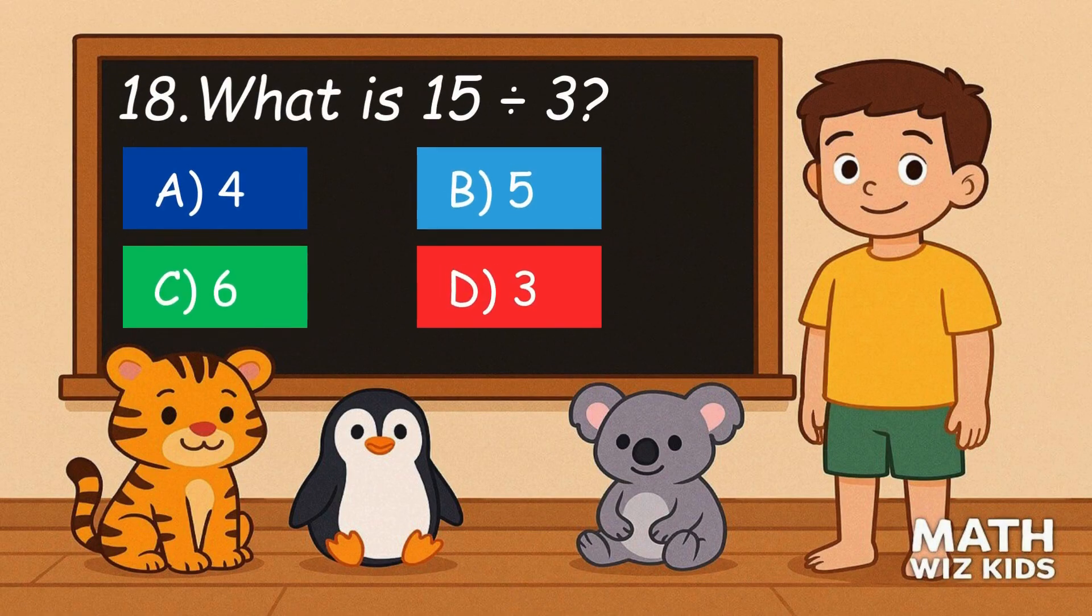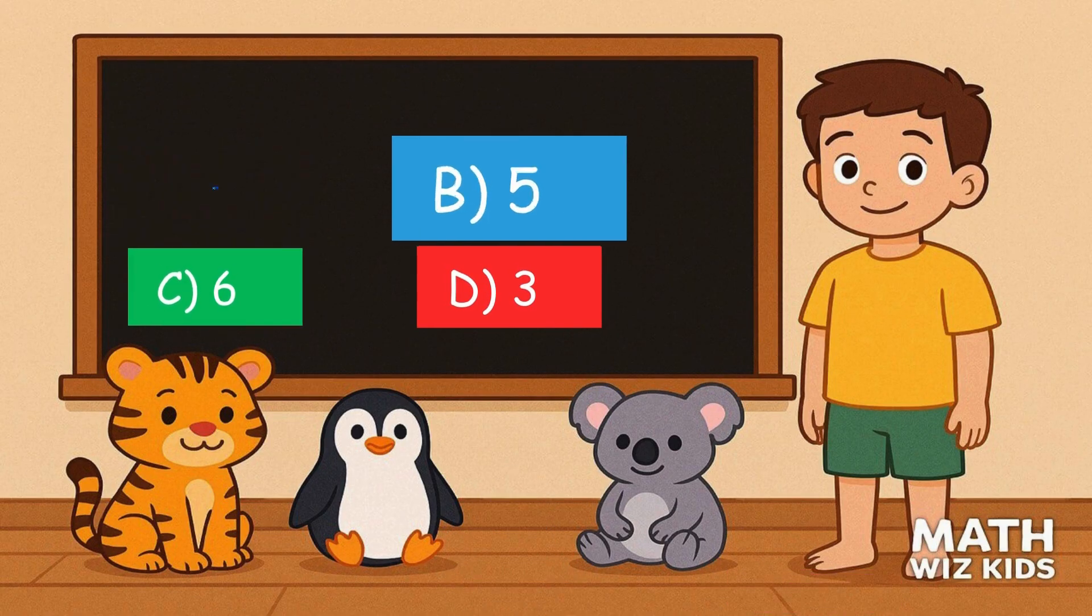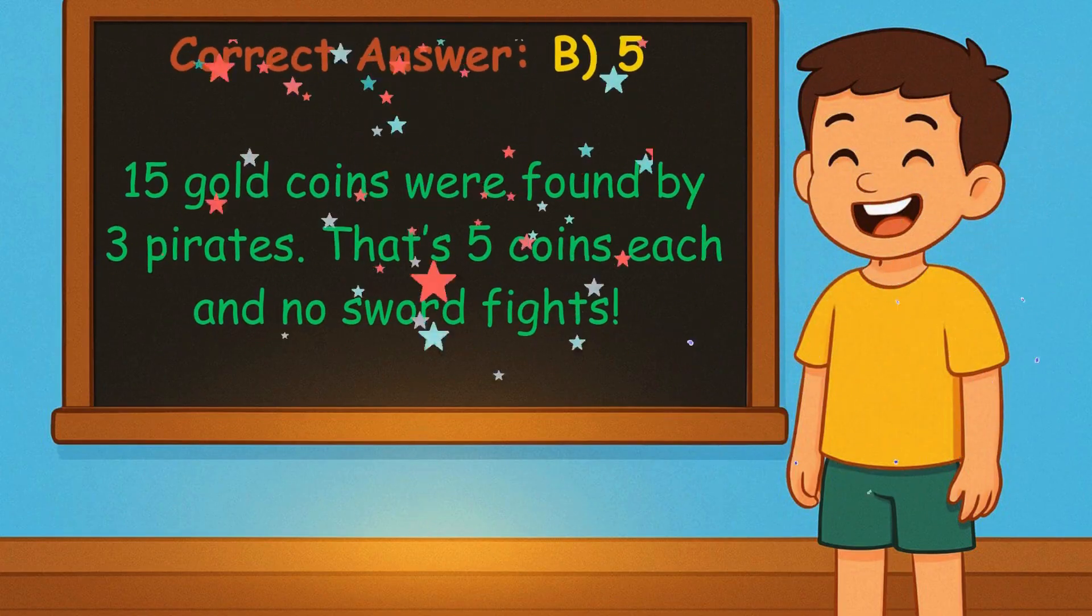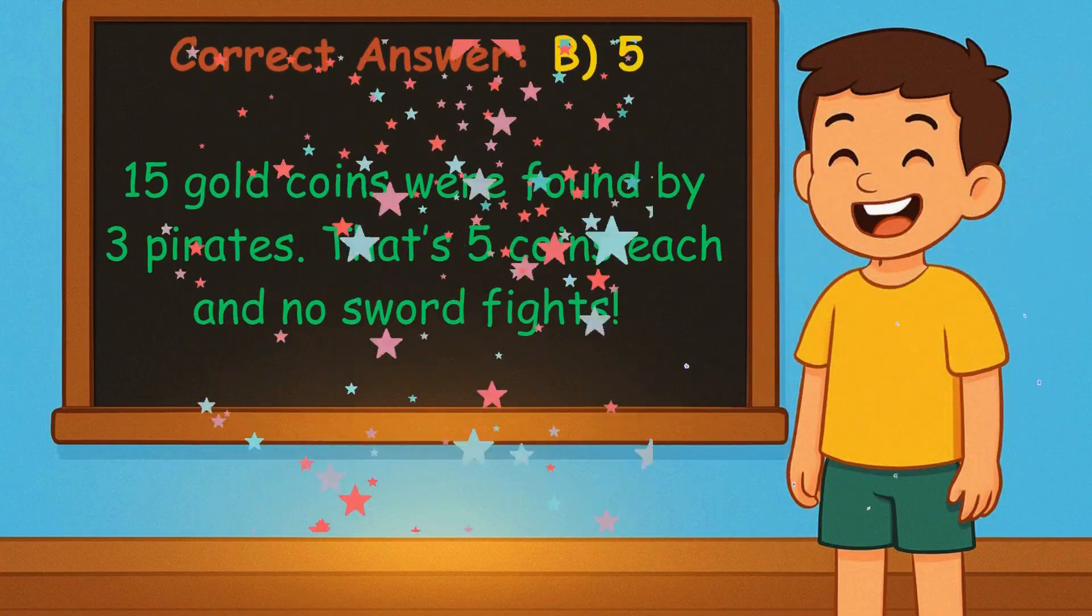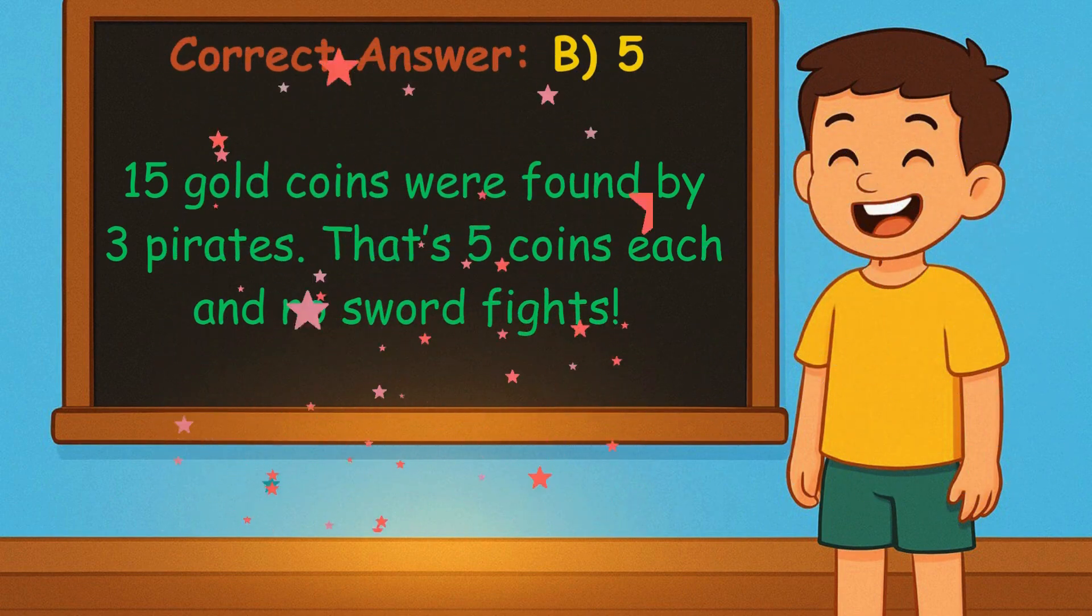18. What is 15 divided by 3? Is it A, 4, B, 5, C, 6, or D, 3? Correct answer is 5. 15 gold coins were found by 3 pirates. That's 5 coins each and no sword fights.